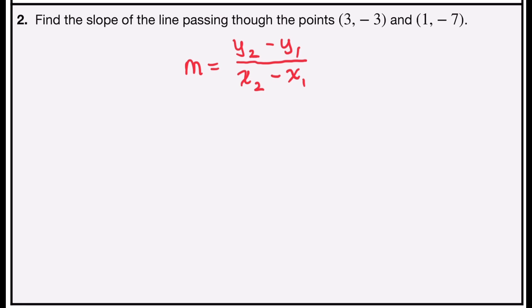Now let's substitute. The second y-coordinate is -7, minus, that's the minus from the formula right here, and my first y-coordinate is -3, and I'm going to put that in parentheses.